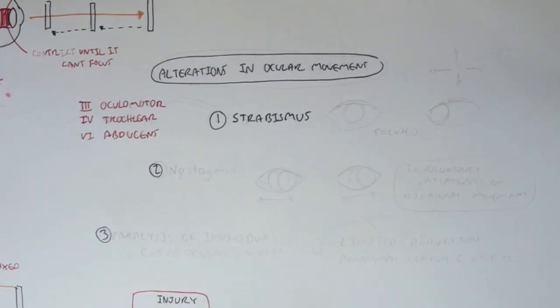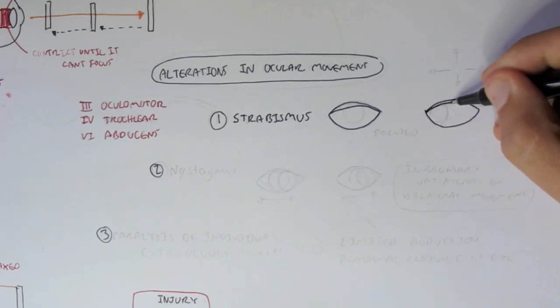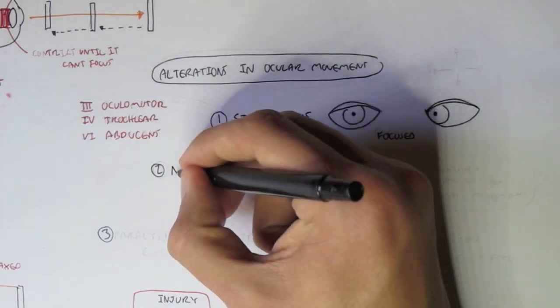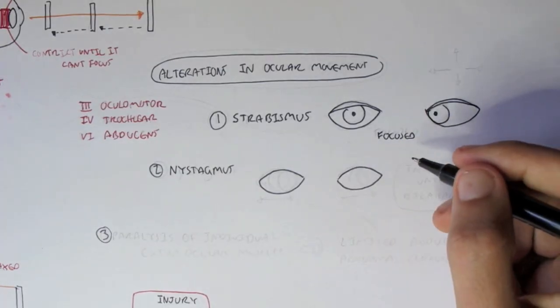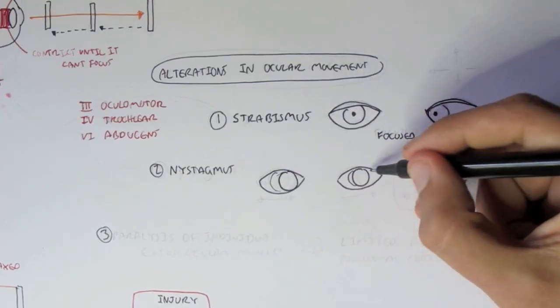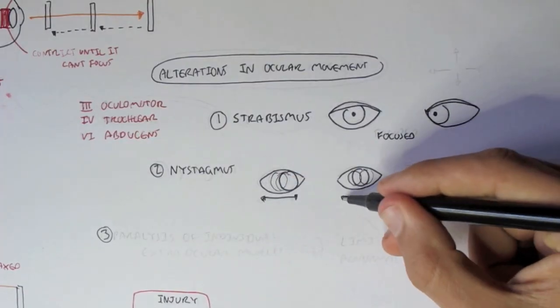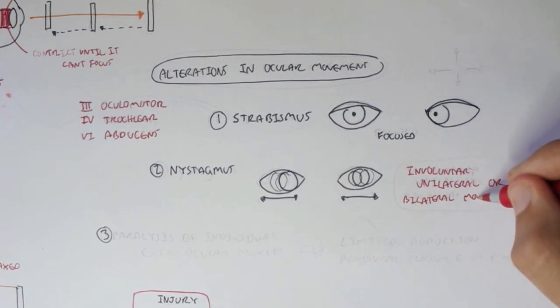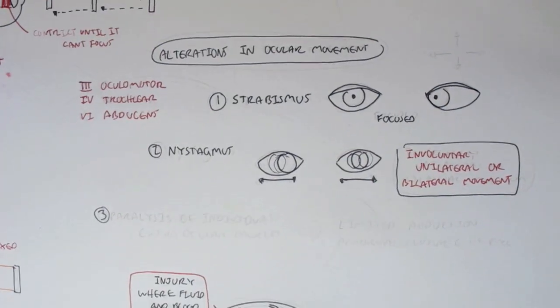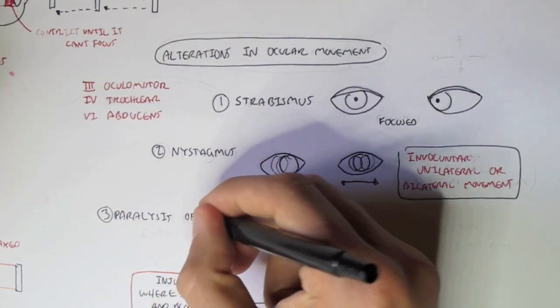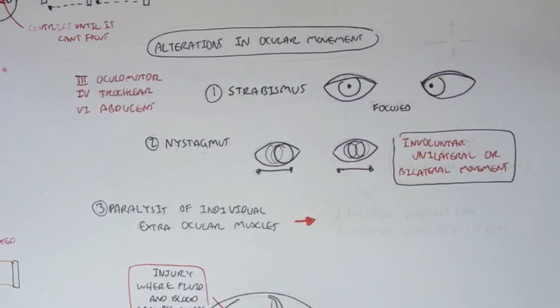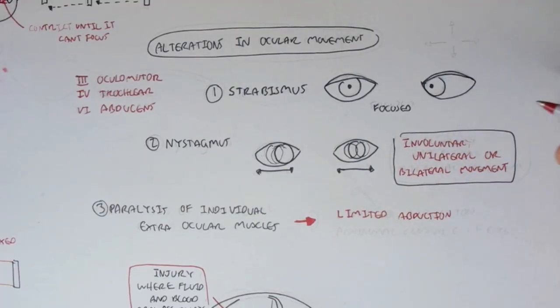And damage to these nerves can cause 3 major problems. A condition known as strabismus, which is essentially, I'll draw it out, when the pupils, when they're focused straight, they're not in the same axis. So one can face medially while one faces in front. Second condition it can cause is nystagmus, which is involuntary unilateral or bilateral movement. When your eyes basically shake from side to side, or one or two, one of the eyes or both of the eyes involuntarily move. The third condition can be from paralysis of individual extraocular muscles, which each of these cranial nerves supply. So damage to these paralysis of individual extraocular muscles can cause limited abduction, amongst many other things, and abnormal closure of the eye.